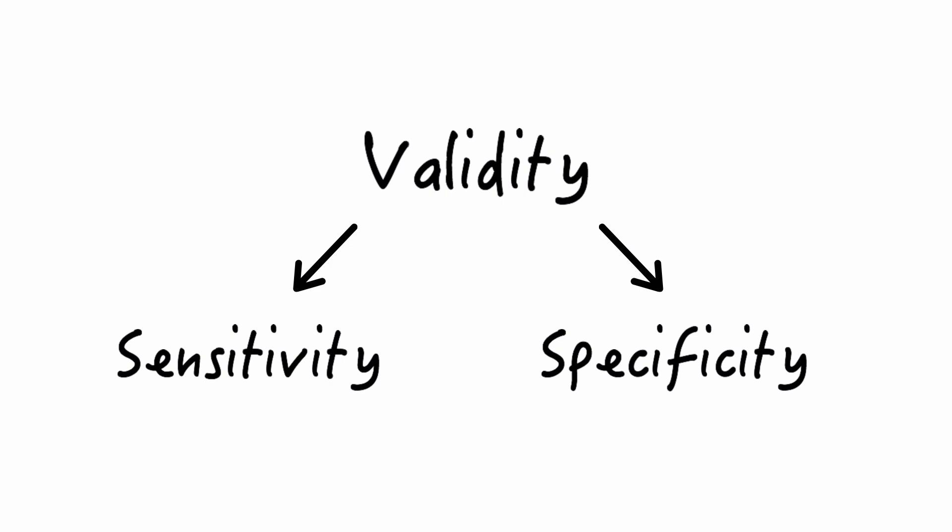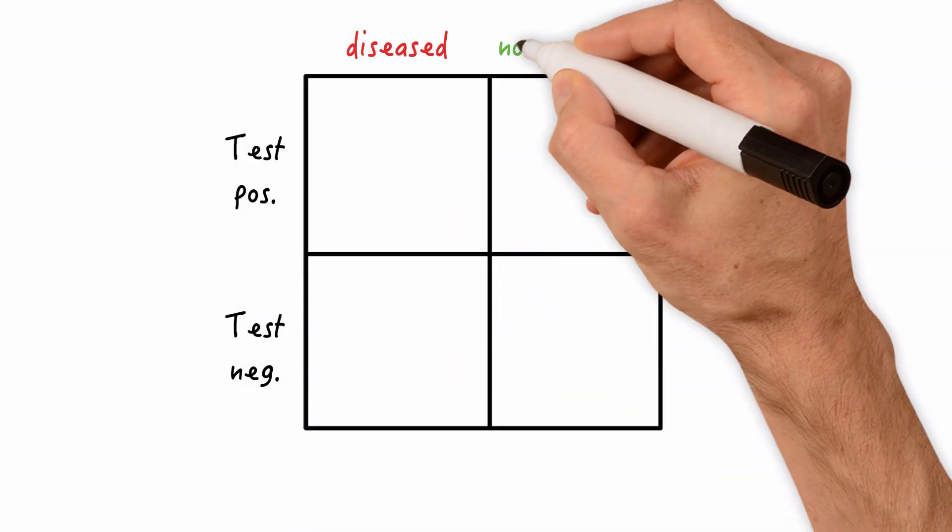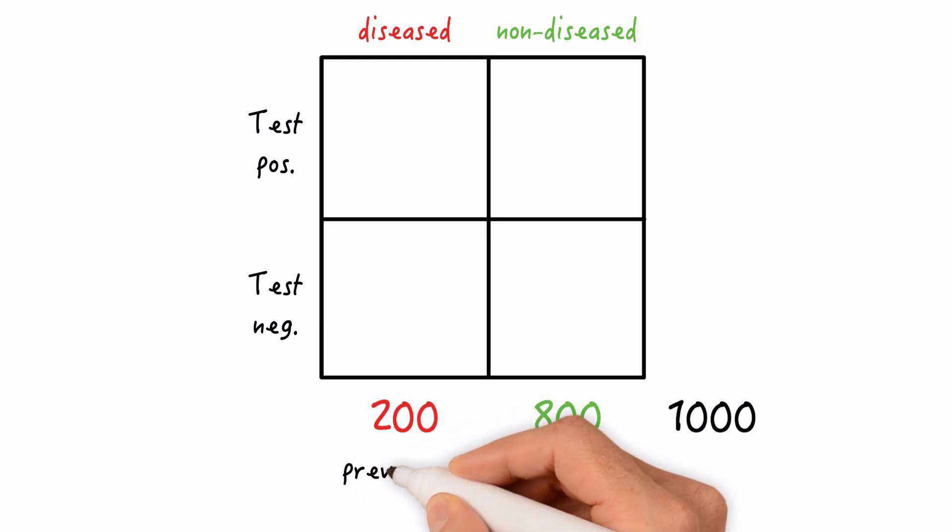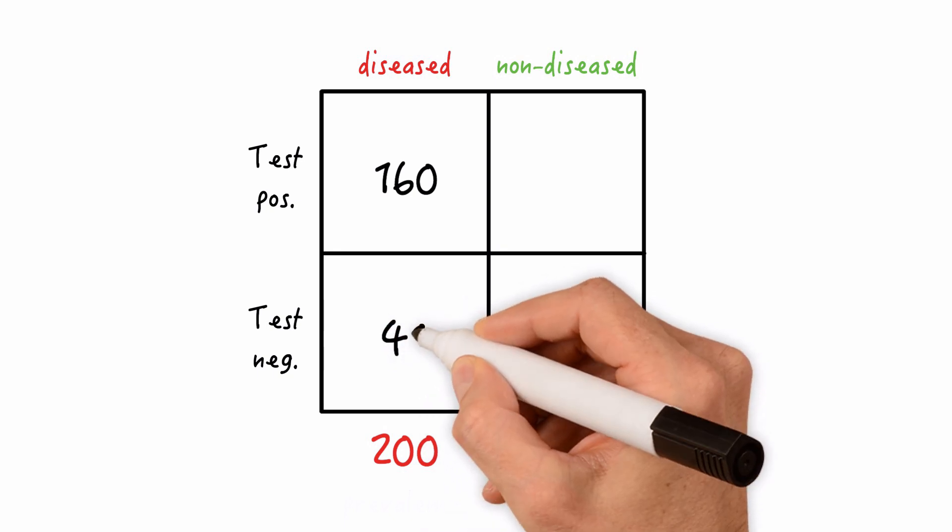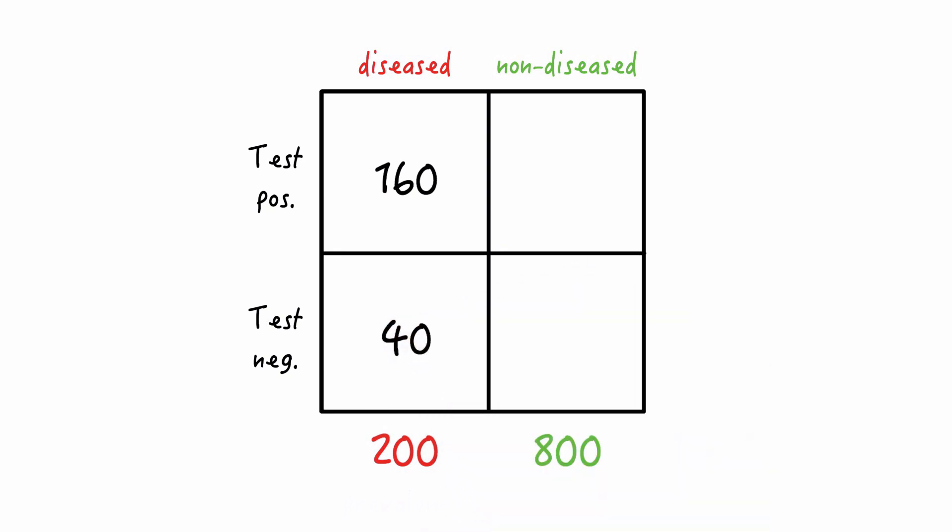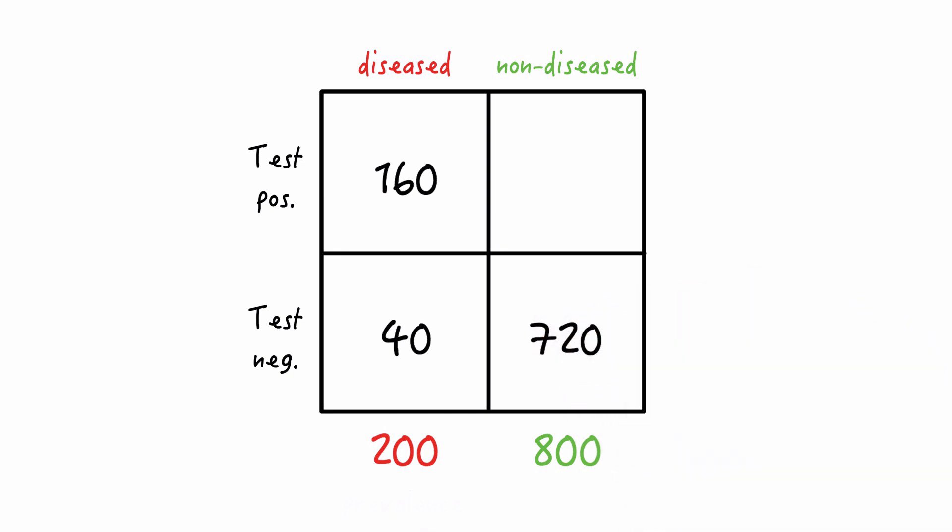Let's look at an example for better clarity. Let's pick a population of 1,000 people and let's say that 200 of them have the disease of interest. So this means that the prevalence is 20%. Now let's also say that 160 out of the 200 diseased people test positive with 40 missed by the test. On the other hand, 720 of non-diseased are correctly classified as negative by the test, whereas 80 are falsely classified as positive.